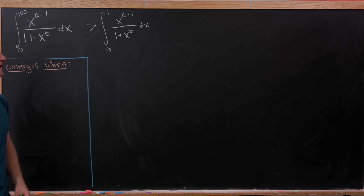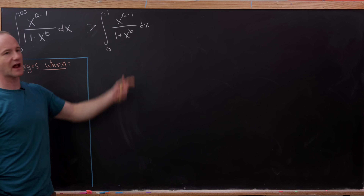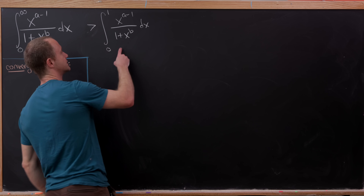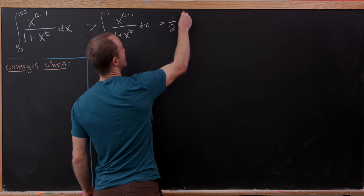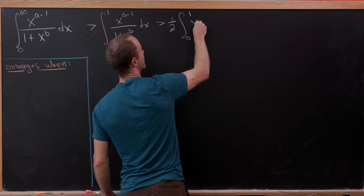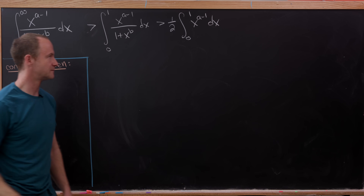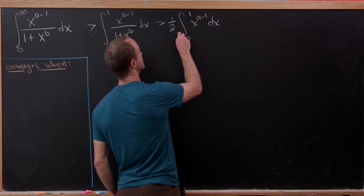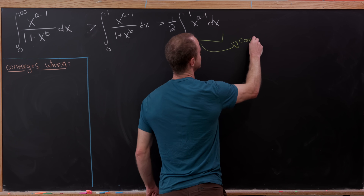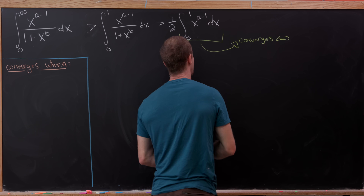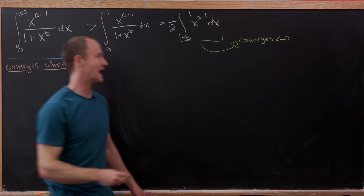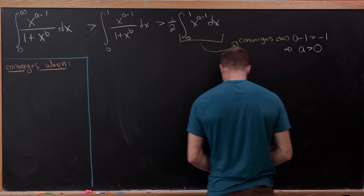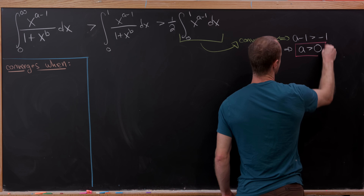Instead of 1 plus x to the b in the denominator, we replace it with 1 plus 1, which is larger for x between 0 and 1, making the whole fraction smaller. So what we have is bigger than one half times the integral from 0 to 1 of x to the a minus 1 dx. This is a standard integral from Calculus 2: it converges if and only if the exponent is strictly bigger than negative 1, meaning a minus 1 > −1, i.e. a > 0. That's our first condition.